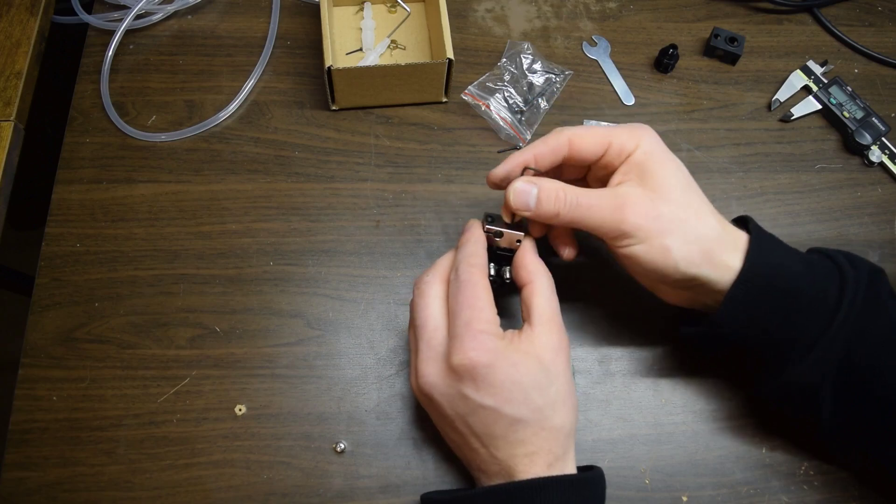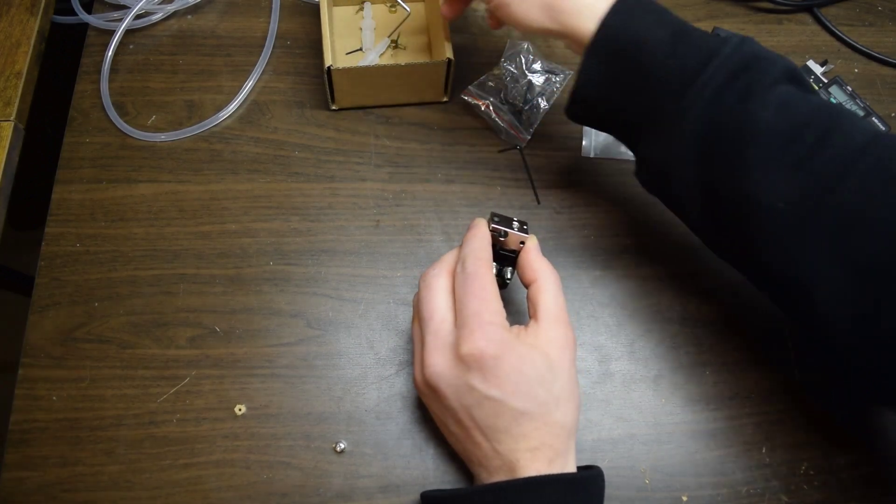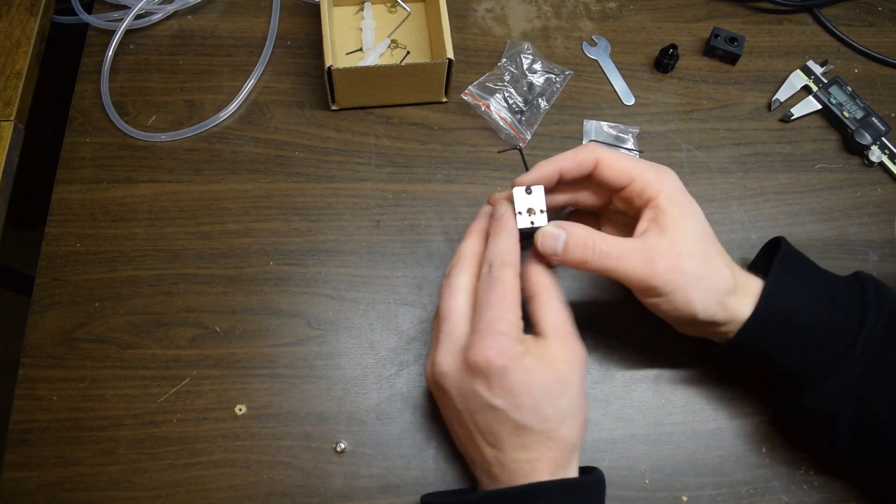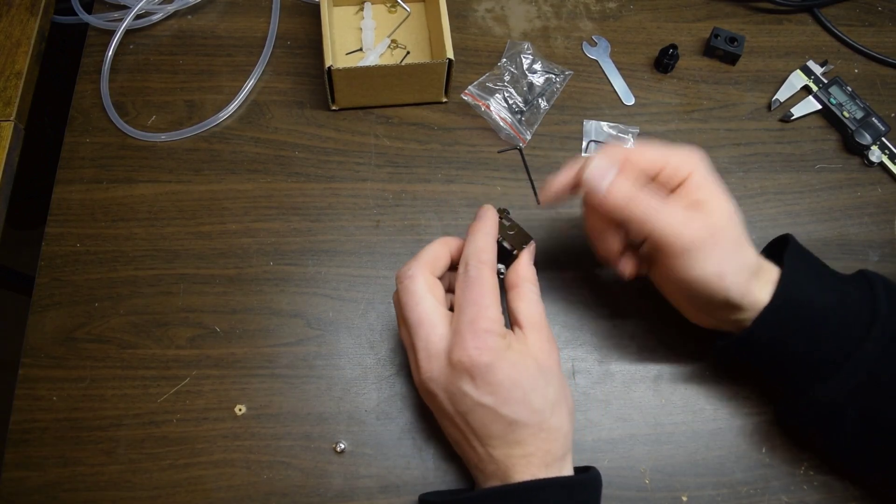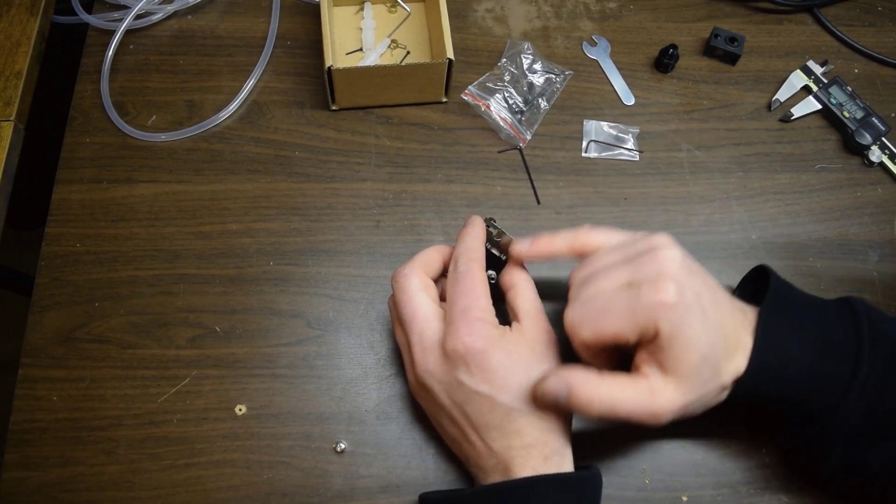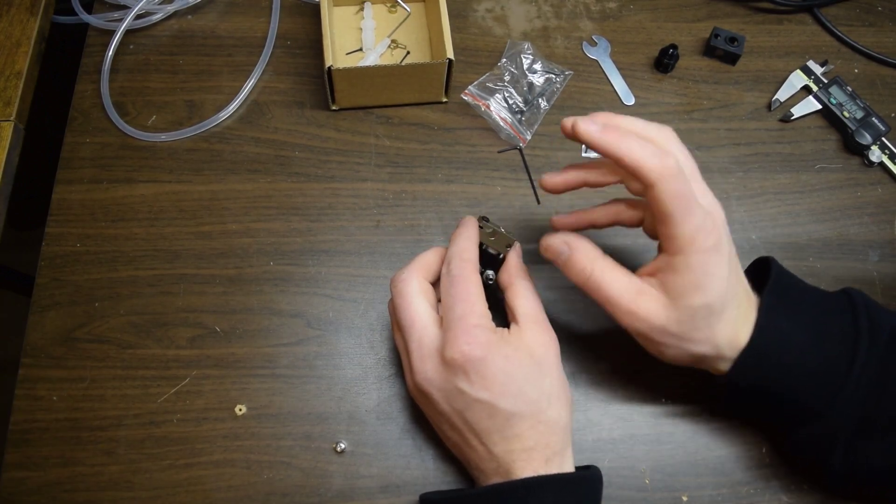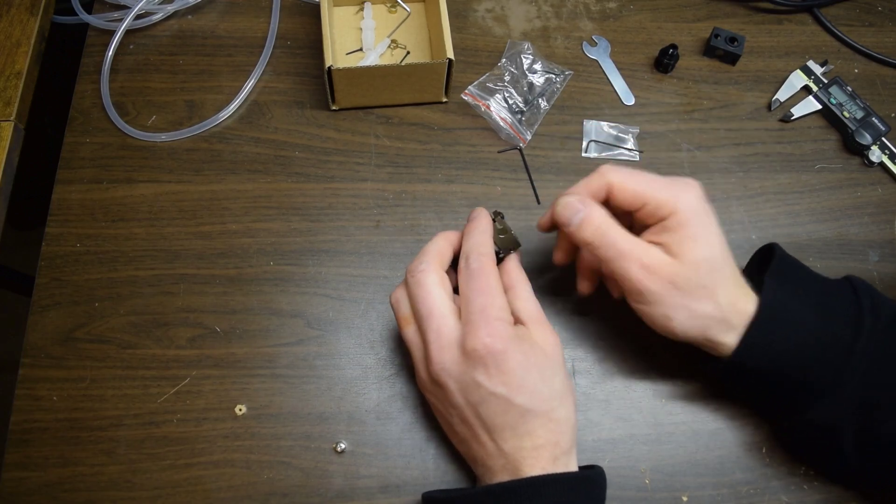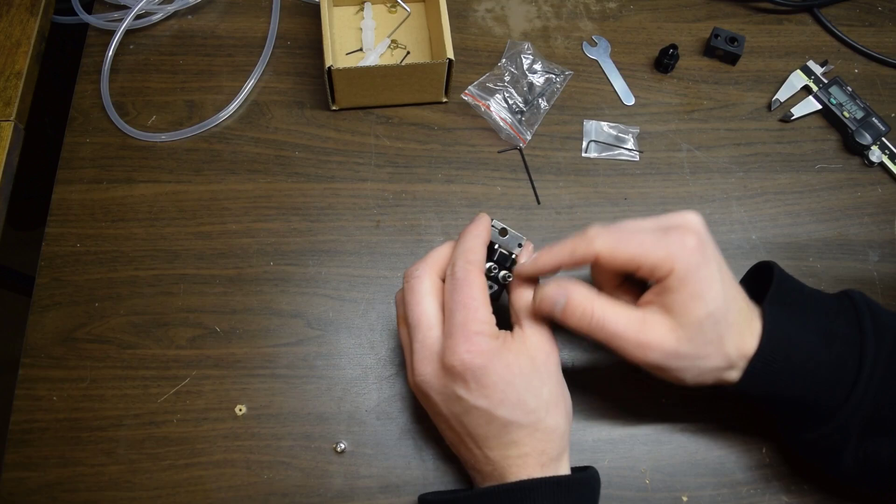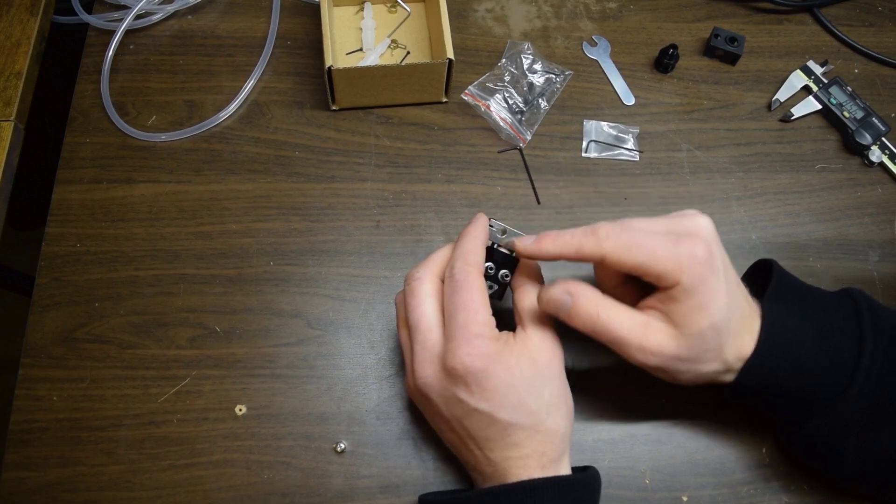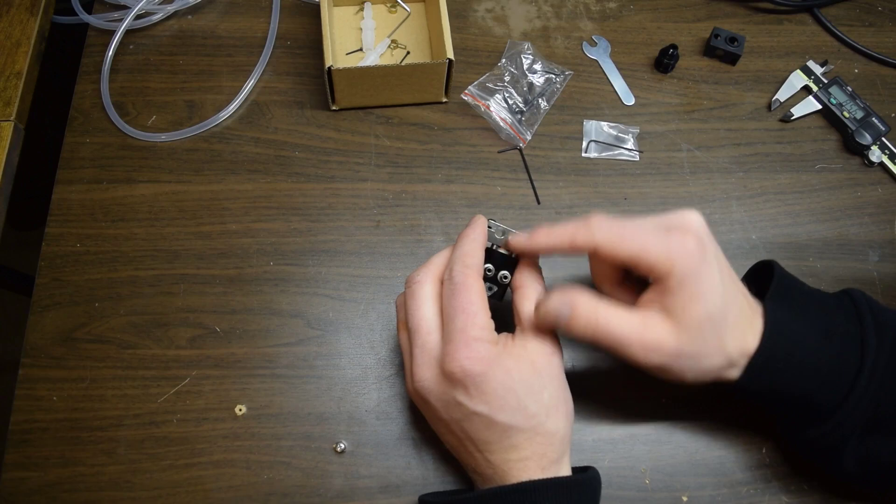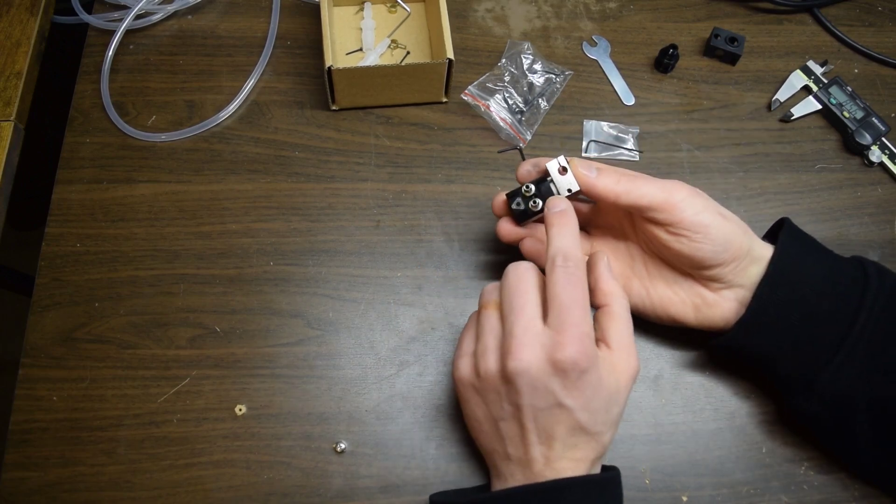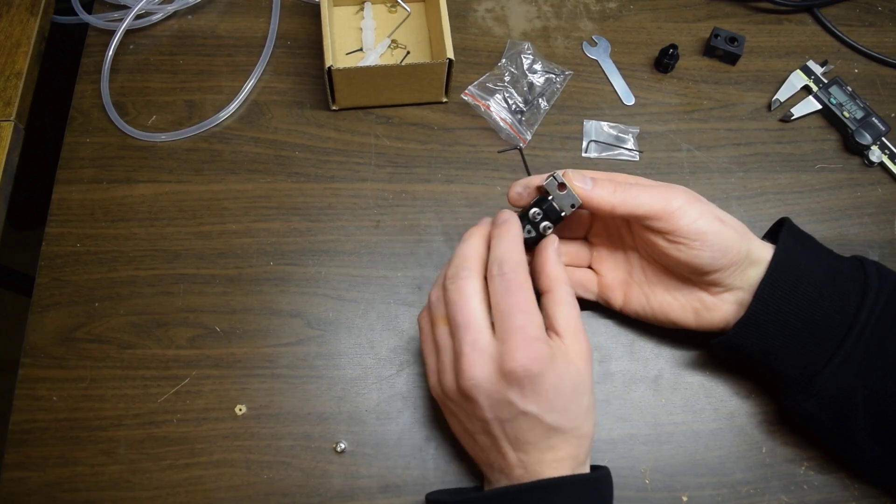I like to actually leave them pretty loose to be honest. I know Dragon says, or Triangle Labs or Fatus, they have an instructions manual out there and they say to put red Loctite on those. I actually haven't had needed to. I actually just tighten those, just really not that tight at all. I'm actually pretty gentle.